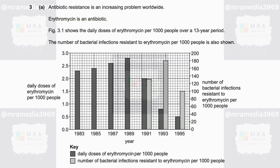Antibiotic resistance is an increasing problem worldwide. Erythromycin is an antibiotic. Figure 3.1 shows the daily doses of erythromycin per 1,000 people over a 13-year period. The number of bacterial infections resistant to erythromycin per 1,000 people is also shown. The bar graph displays the correlation between daily doses of erythromycin per 1,000 people and number of bacterial infections resistant to erythromycin per 1,000 people.